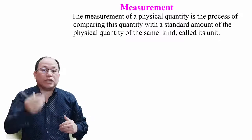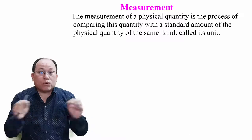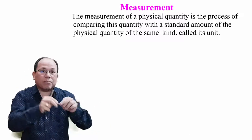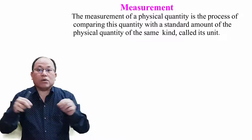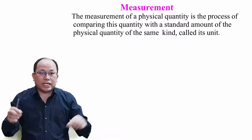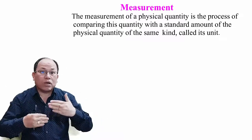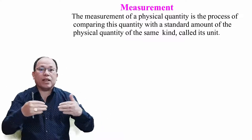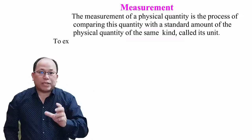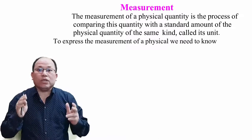For example, when you go to the market to purchase two meters of cloth, the shopkeeper uses a meter scale. The meter scale is the known quantity and the cloth is the unknown. By comparing the unknown with the known, we measure it.